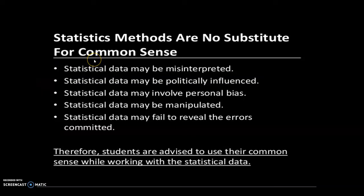Our last topic — statistical methods are no substitute for common sense. There is an interesting story: a family of four members — husband, wife and two children — set out to cross a river. The father knew the average depth of the river, so he calculated the average height of his family members. Since the average height was greater than the average depth, he thought they could cross safely. Consequently, some members of the family — the children — drowned while crossing the river. So, use your common sense while working with statistical data.